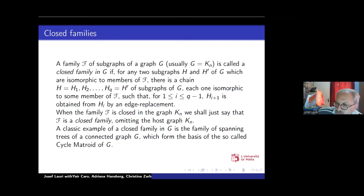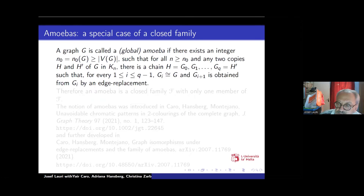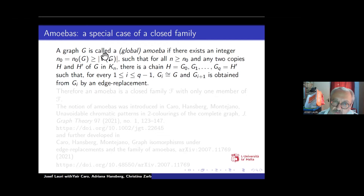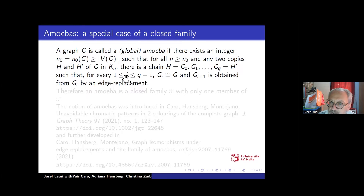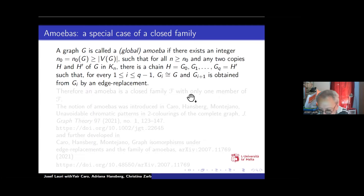A classic example of a closed family in G is the family of spanning trees of a connected graph, because they form the basis of the cycle matroid of G. Amoebas — and this is one of the algebraic aspects I want to emphasize — are closed families consisting of only one isomorphism type. In the ambient graph G, if it is always possible to move from any copy of H to any other isomorphic copy via a chain of single edge replacements, that graph is called an amoeba.